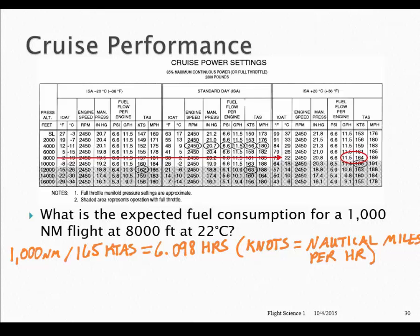This is obviously assuming a zero wind condition — we're not talking about ground speed here, just true airspeed. Knots equals nautical miles per hour. So the next step is to take that 6.098 hours and multiply by our fuel flow of 11.5 gallons per hour, and we end up with 70.1 gallons for our total fuel consumption for this trip.